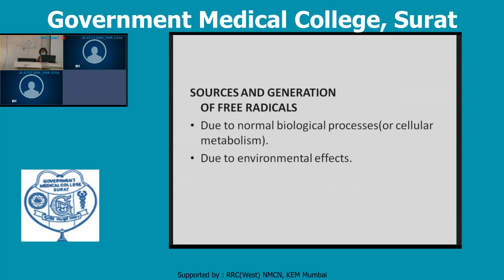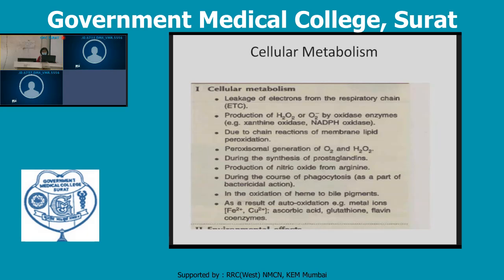Sources and generation of free radicals: they are produced normally by biological processes or cellular metabolism. These include leakage of electrons from the respiratory chain, production of H₂O₂ by oxidases, chain reactions of membrane lipid peroxidation, peroxisomal generation of oxygen and hydrogen peroxide, synthesis of prostaglandins, production of nitric oxide from arginine, phagocytosis, oxidation of H₂O₂ and bile pigments. Auto-oxidation involves metal ions Fe²⁺ and copper, ascorbic acid, glutathione, and flavin coenzymes.